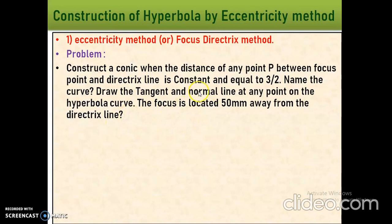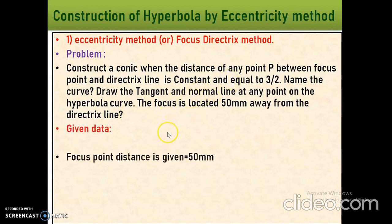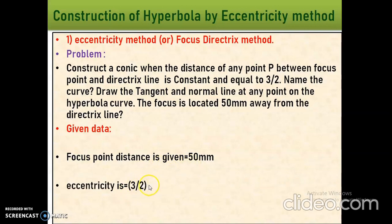What is the given data? Focus point distance is given — that is 50 mm. The focus point is located at a distance of 50 mm from the directrix line. The eccentricity value of the hyperbola is given — that is 3 by 2, which is greater than 1. So that's why it is a hyperbola. If eccentricity is less than 1, that is ellipse; equal to 1, that is parabola. In this problem, eccentricity equals 3 by 2, so the name of the curve is hyperbola.